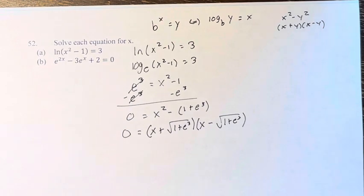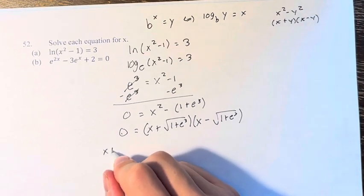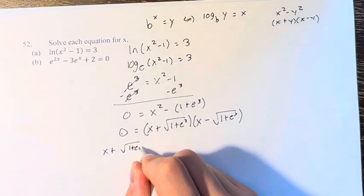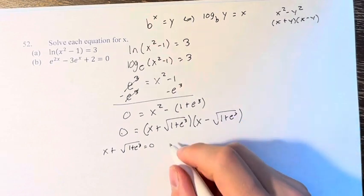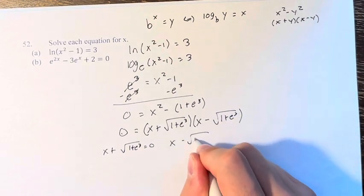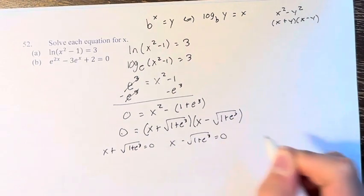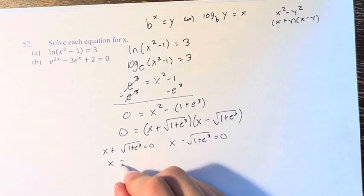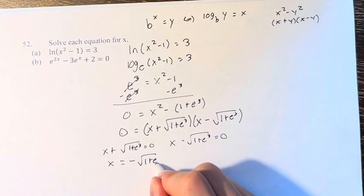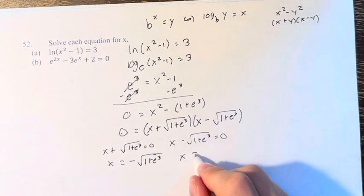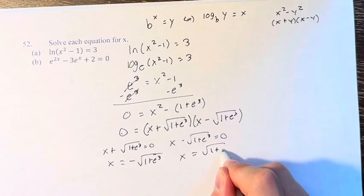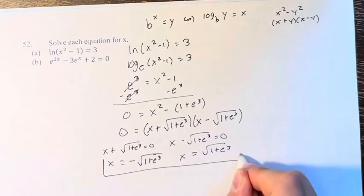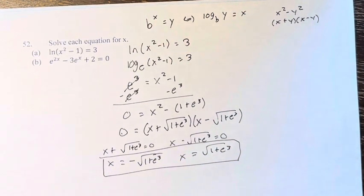The reason I'm doing this is so we can remember that if this is 0, then this has to be equal to 0, or this has to be equal to 0. Therefore, x equals negative square root of 1 plus e cubed, or x equals positive square root of 1 plus e cubed. These are the solutions to this equation.